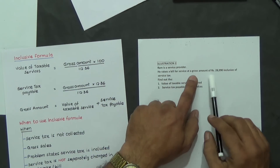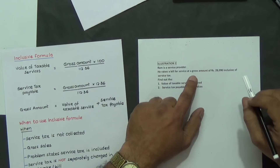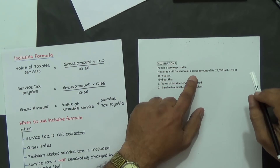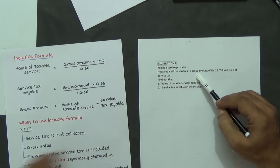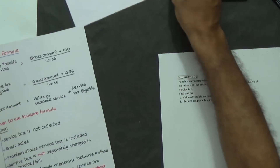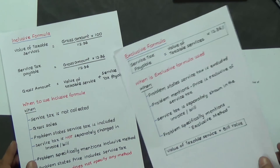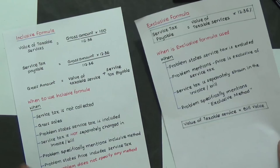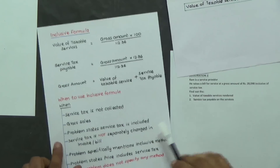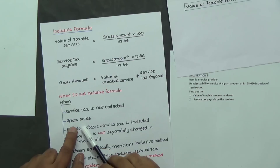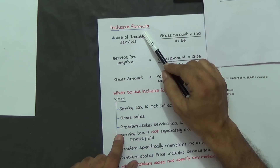Now you'll have a dilemma — which formula to use? Exclusive formula or inclusive formula? The moment you see the word 'gross', you need to search these two sheets to identify where gross is used. We identify that gross is used when gross services, gross amount, gross sales — when we see 'gross', that means we'll have to use the inclusive formula.